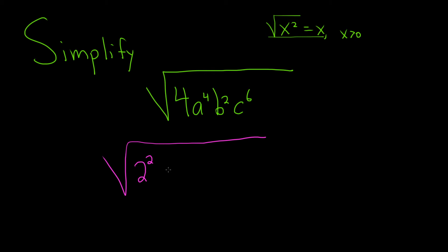The a, it's a to the 4th. We can write that as a squared squared. The b squared is already good, so that's okay.